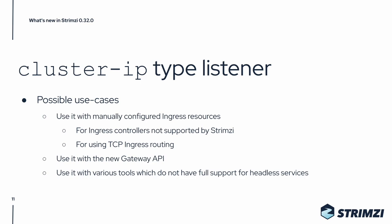For example, if you want to use Strimzi with some ingress controller which is not supported by Strimzi, you can use the Cluster IP listener and configure the ingress resources yourself manually, pointing them to the Cluster IP services. Similarly, you can use it this way also for TCP ingress routing. Or you can use it with the new Gateway API which is being introduced in the Kubernetes landscape and should replace the ingress API in the future. Or you can use it with various tools which do not have full support for headless services, such as the Telepresence tool which allows you to connect to Kubernetes services directly from your laptop.